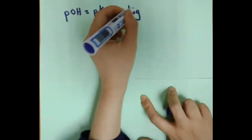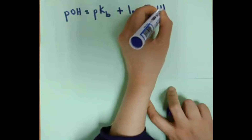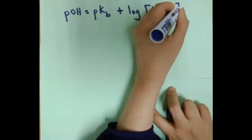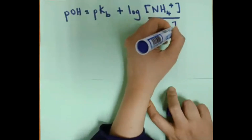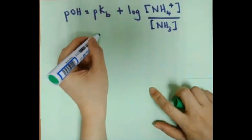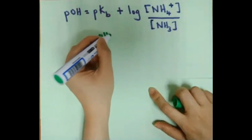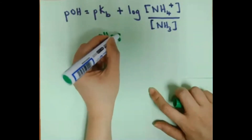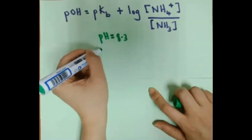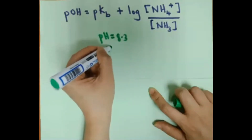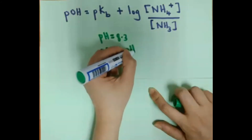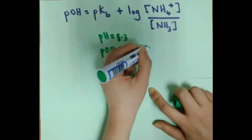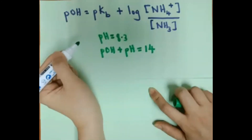It is a basic buffer solution, so we use the Henderson-Hasselbalch equation for basic buffer solutions. Given that pH equals 8.3, we first find pOH using the formula: pOH + pH = 14.